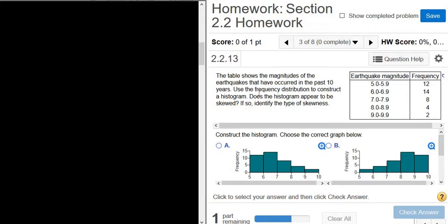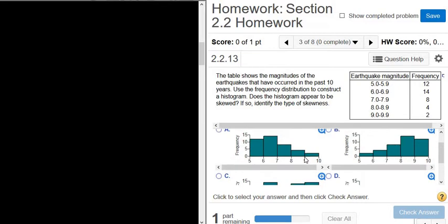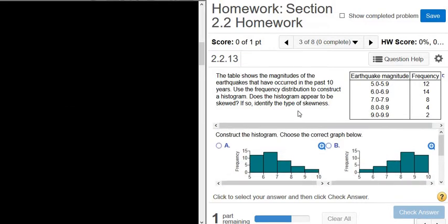The table shows the magnitudes of the earthquakes that have occurred in the past 10 years. Use the frequency distribution to construct a histogram. Does the histogram appear to be skewed? If so, identify the type of skewness. Okay, so this is a multiple choice question, so we don't actually have to be perfect in our graph. So let me show you how to give a rough sketch of a histogram.